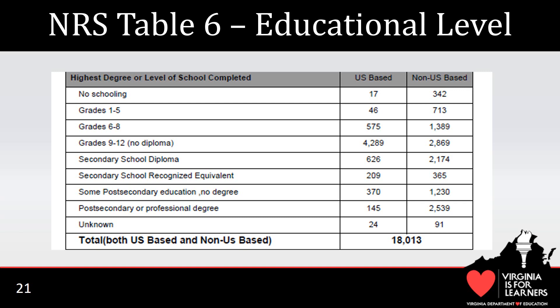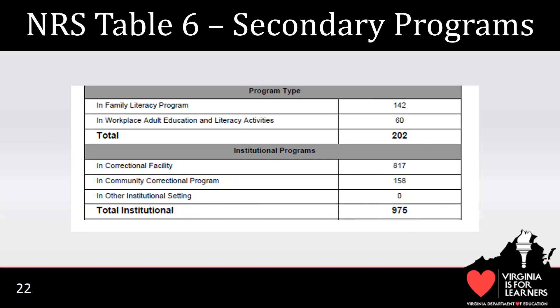In the middle section of NRS Table 6, the highest degree or highest level of school completed by participants is provided. Just as with employment status, the highest educational level information is based on information reported on the ASPD. It's interesting to note the number of participants who enter our adult education programs having already earned a post-secondary credential outside of the United States. In the last section of NRS Table 6, enrollment data and secondary program types are provided. The term secondary program types is not connected with secondary school diplomas or credentials. Instead, it refers to program types other than ABE, ASE, ELA, and IELCE.